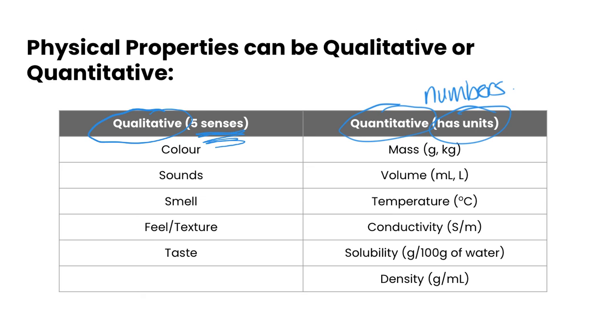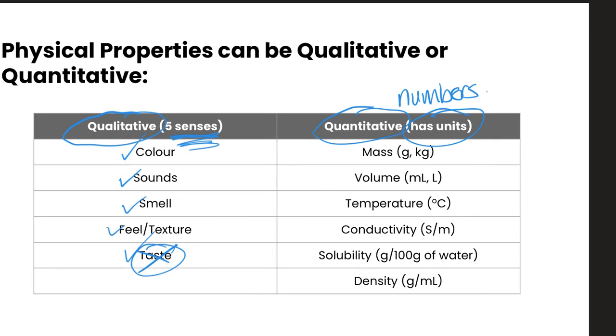Looking at some examples of qualitative properties, those could be things like color, sounds, smell, feel or texture, or taste. Taste is not one we do in the lab though, so just keep that one in mind.